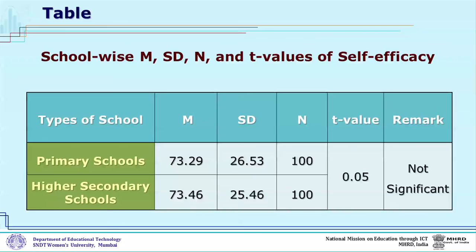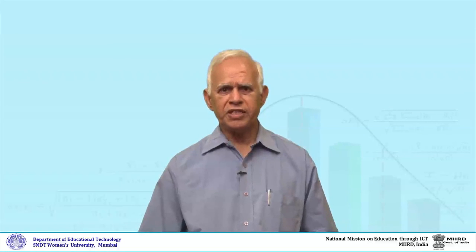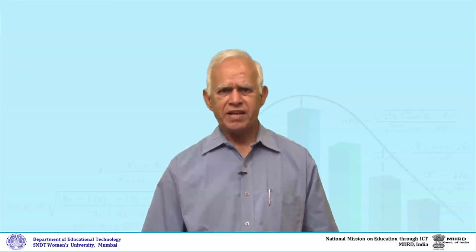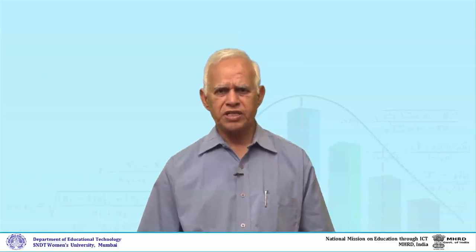From the table, it can be seen that the t-value is 0.05, which is not significant. Thus, you have understood how to interpret the t-value both when it is significant and when it is not significant.